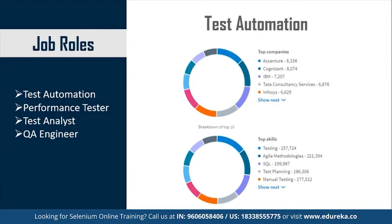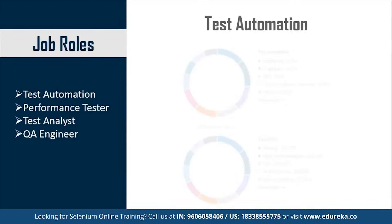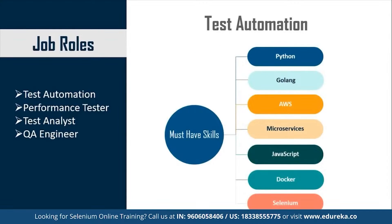The top skills required to become a Test Automation Engineer include knowledge of testing, Agile Methodologies, SQL, Test Planning, and manual testing. Apart from these, you need to be well acquainted with programming languages like Python, Golang and JavaScript, and also well versed with AWS, Microservices, Docker and Selenium. These skills will help you move to a higher position as a Test Automation Engineer and add to your appraisal.